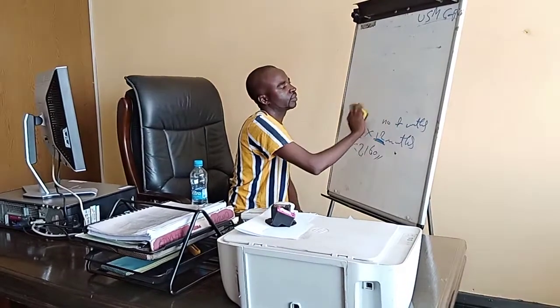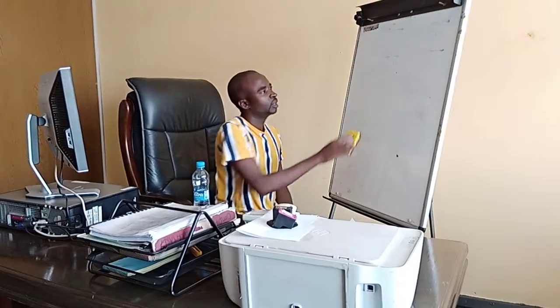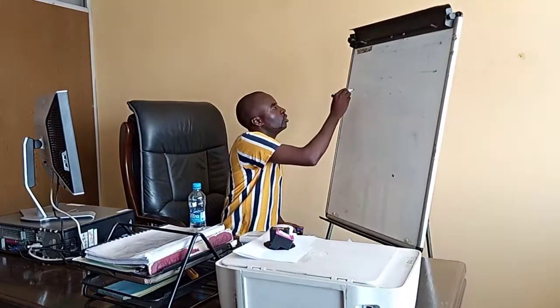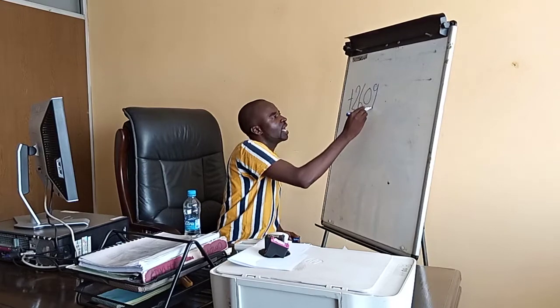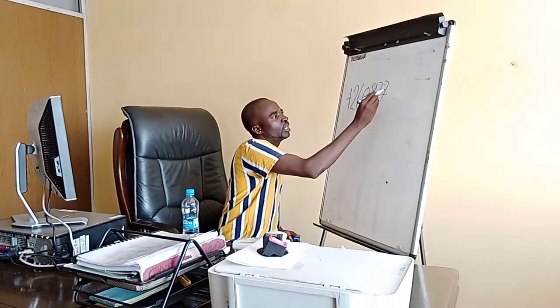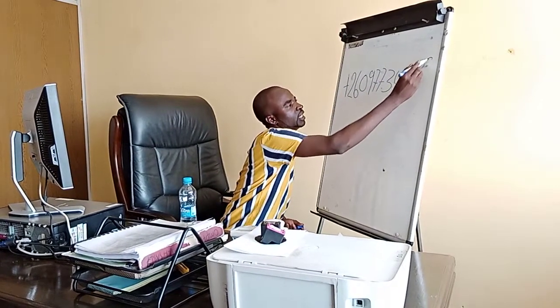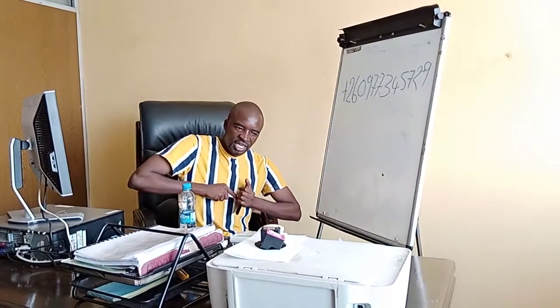This is also how we calculate the housing allowance. For our viewers, if you want to find more details about us, we are located at Low Child, 6th floor, room 3. Our contact number is +260 977 34 57 29 29. See you next time.